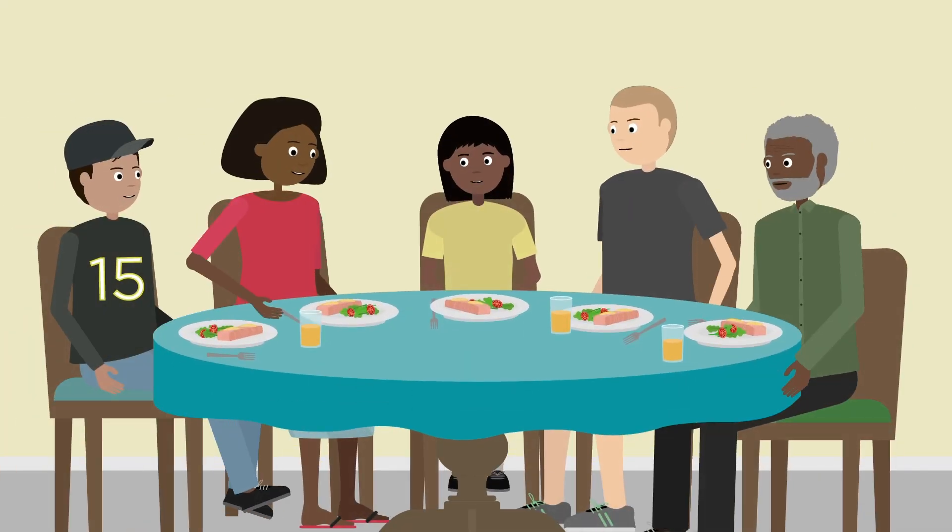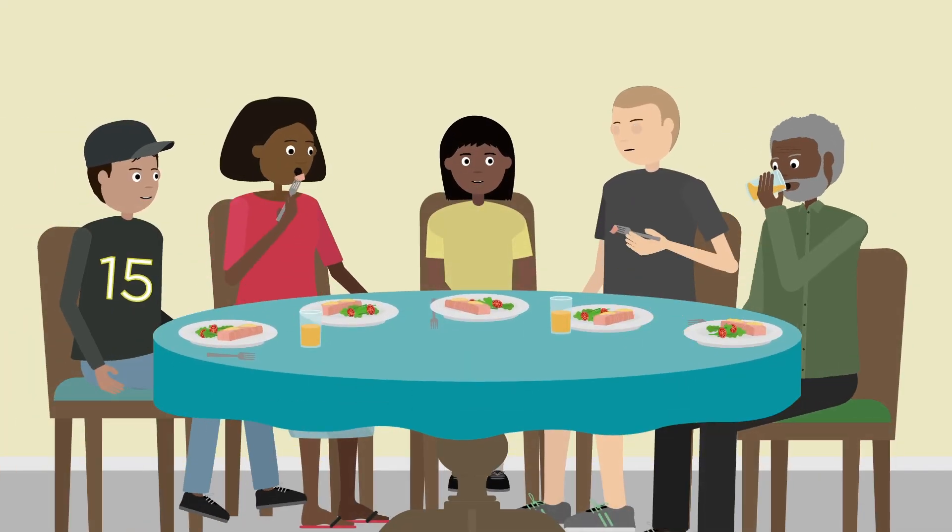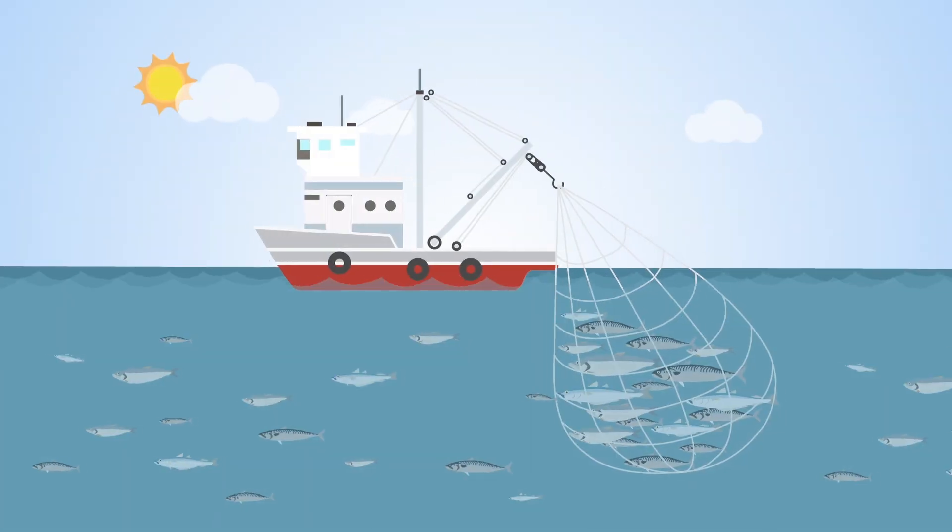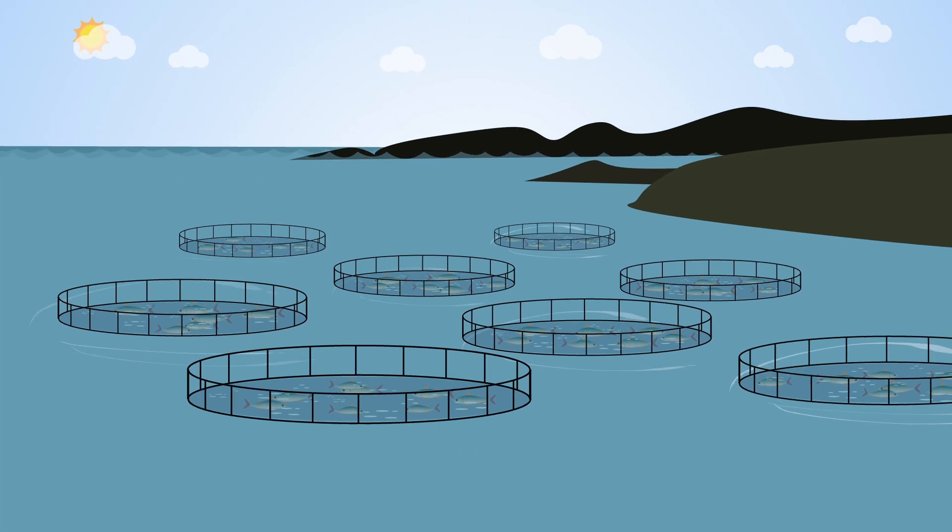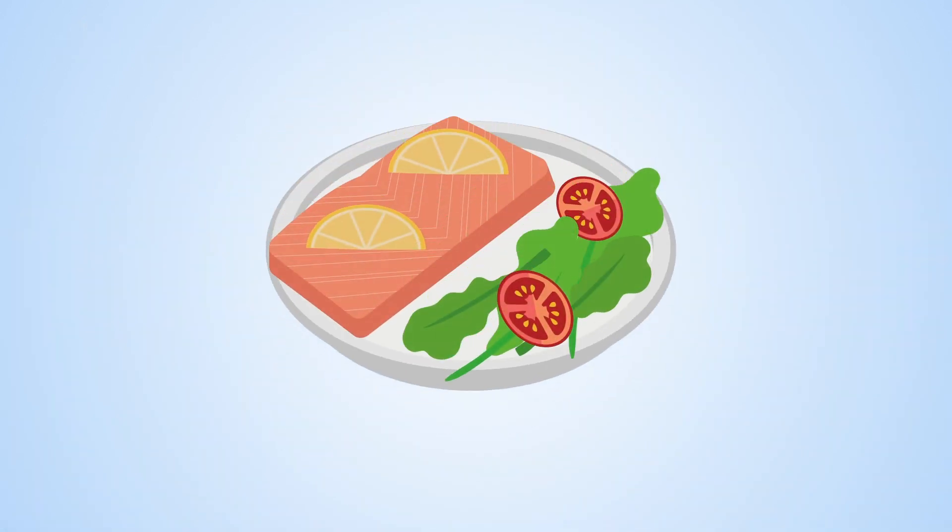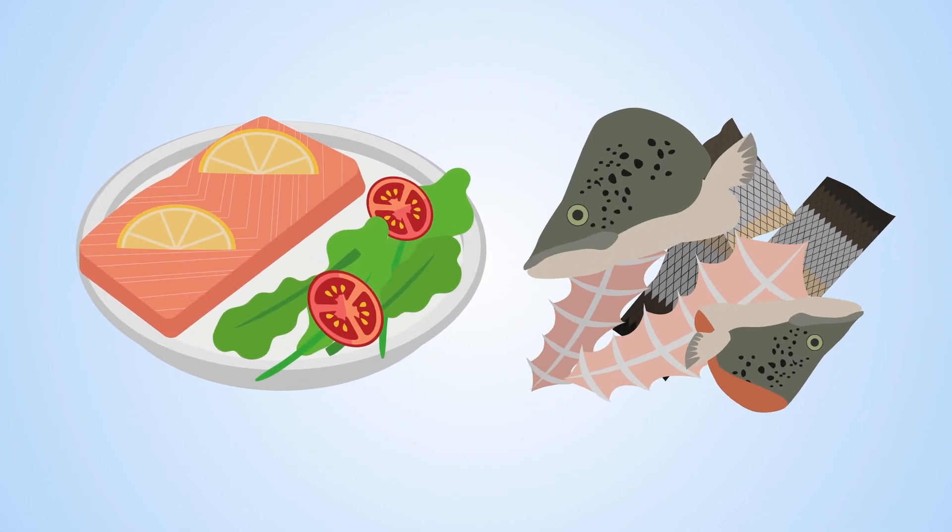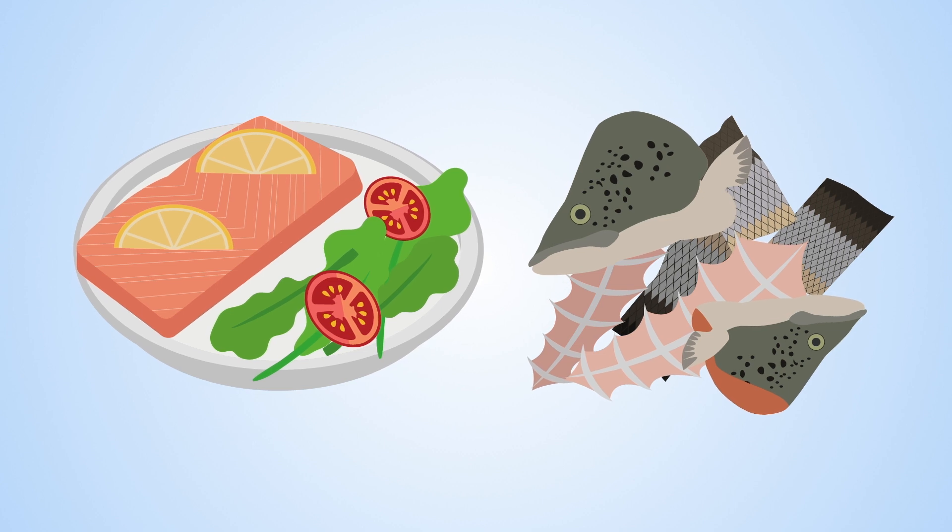Fish is a great source of proteins and omega-3 fatty acids. The fish we eat comes from fishing the oceans and farming. But only 50% of the fish biomass caught or farmed in Europe ends up on your dinner plate. What happens with the rest?